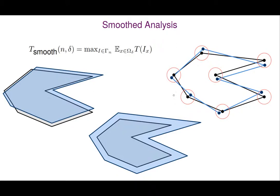What are typical instances? There is a famous notion of smooth analysis, where given some input — even the worst input — we are allowed to perturb it a little bit. For instance, the black polygon on the right: we allow perturbing it slightly, because practical instances may look a little like the black polygon but not exactly, since there's always some fuzziness in measurements. We would like to see what the complexity is if we slightly perturb it, representing a typical instance that has some randomness but also retains structure.